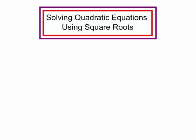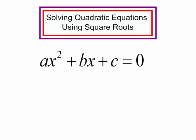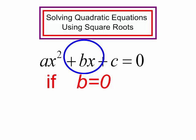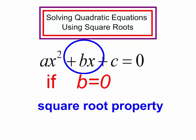We are going to talk about solving quadratic equations using square roots. ax squared plus bx plus c equals 0 is the general form of a quadratic equation. If b is equal to 0, we can solve these quadratic equations using square roots — some people might call this the square root property.